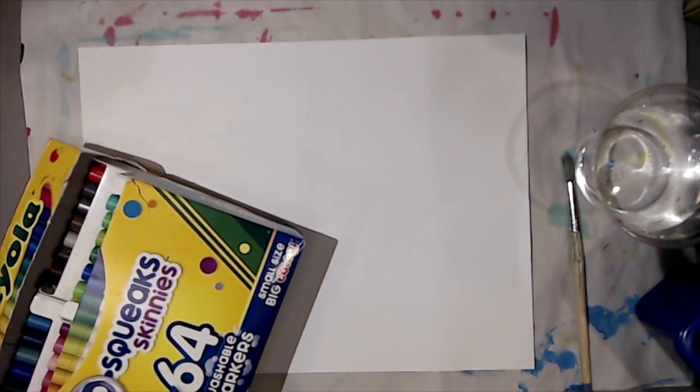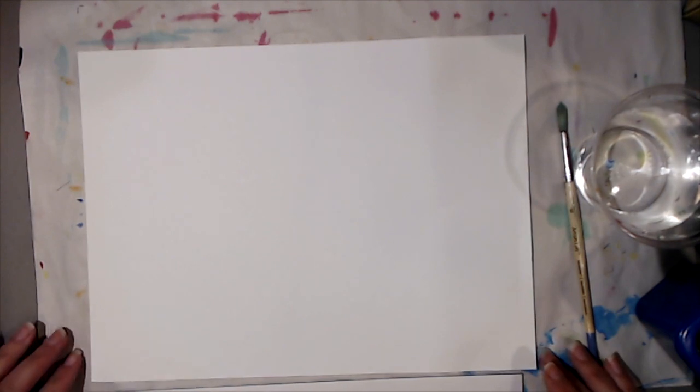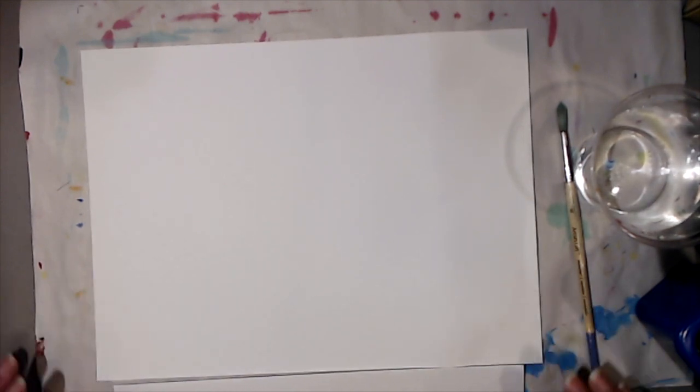I'm going to need some regular crayons, some washable markers, a cup of water, and a paintbrush. And that's it. So I'm going to get my copy of The Sun and put it down here in front of me while I'm working to refer to. If you don't have a computer that you can pull it up on the screen or a color printer to print it out, you can still follow along with me.